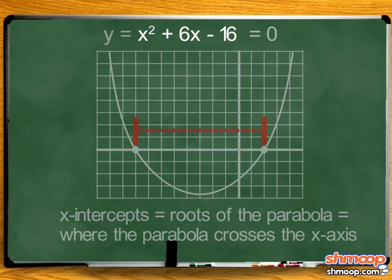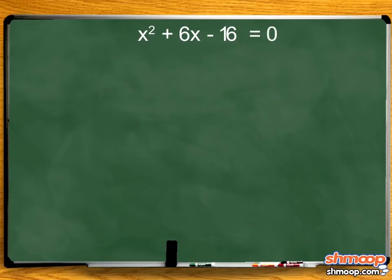So let's set y to zero in our equation: y equals x squared plus 6x minus 16 equals zero. To find the x-values where y equals zero, we can factor the right side into the form (x + p)(x + q).